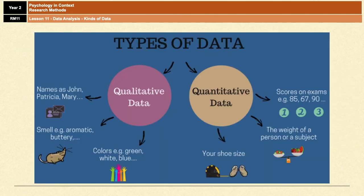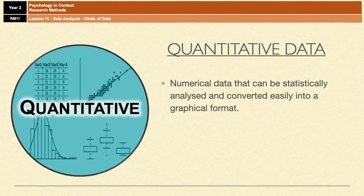So qualitative and quantitative data. Quantitative data is essentially numbers. It is data that can be expressed numerically and that can be statistically analyzed and easily converted into graphs or can easily be used to create means or standard deviations or something along those lines.